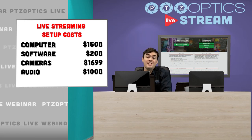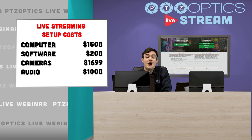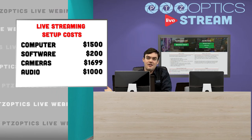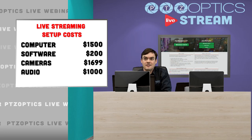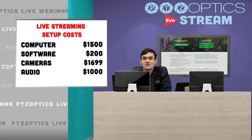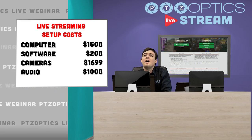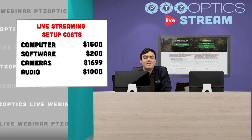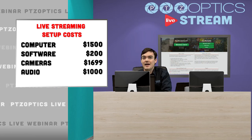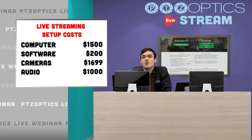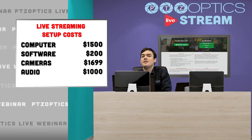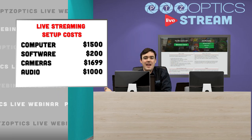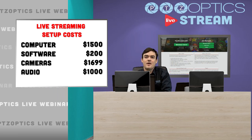When you're setting up a live stream, these are the things you have to budget for, other than internet and a CDN which is free with YouTube Live. A computer, software — we put in $200, it could be more or less — cameras, microphones, and audio. So that's just some rough numbers to think about.